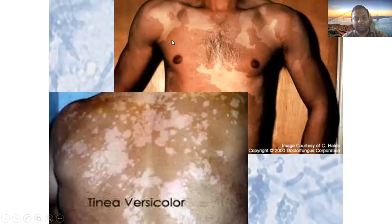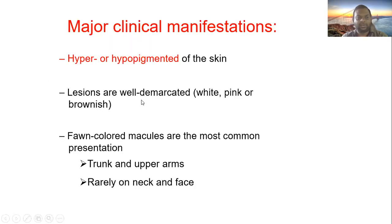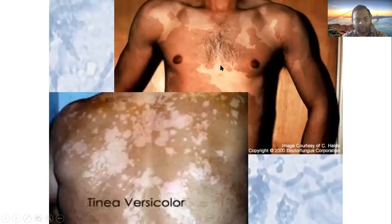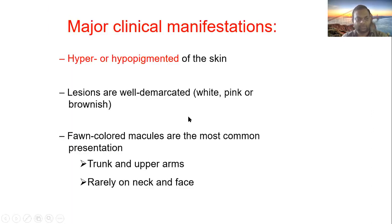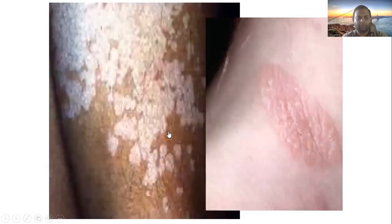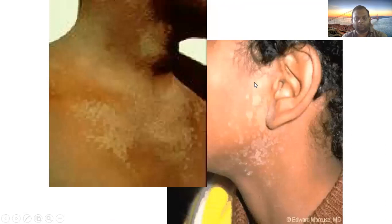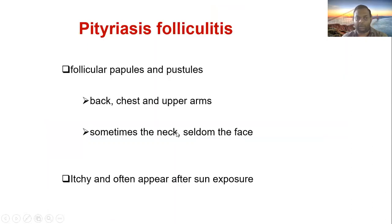The major clinical manifestations include hypopigmentation and hyperpigmentation. Lesions are well-demarcated and margins are visible. Fawn-colored macules are the most common presentation, found on the trunk, upper arms, neck, and face. It is a common cosmetic problem.